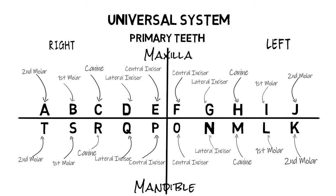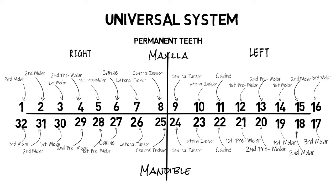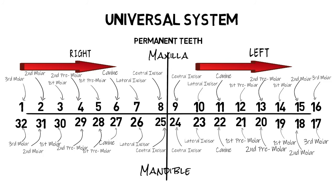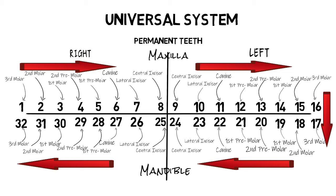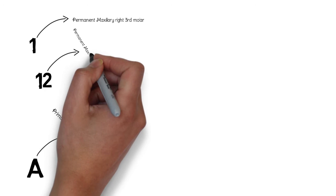From J, the naming then goes straight down to the mandibular left primary second molar, which is K, and then goes all the way to the right mandibular second molar named as T. The same pattern applies when naming permanent teeth, but here numbers are used instead of alphabets: 1 being your right maxillary third molar, 16 being your left maxillary third molar, 17 being your left mandibular third molar, and 32 being your right mandibular third molar. So in the universal tooth numbering system, each tooth has its own specific number or alphabet.